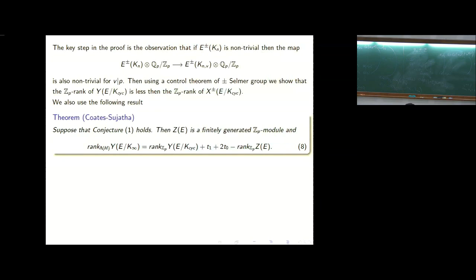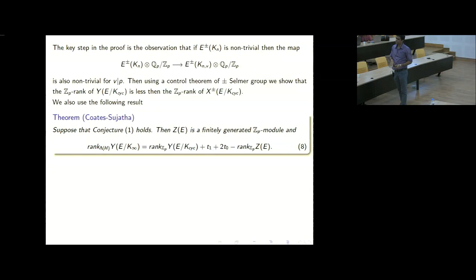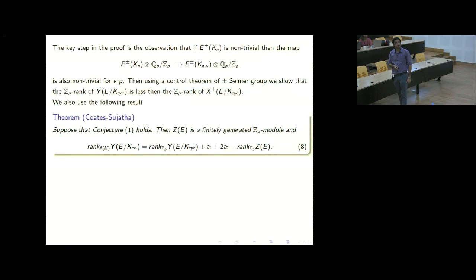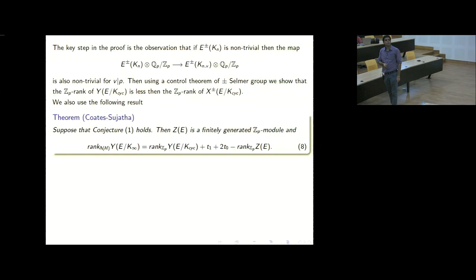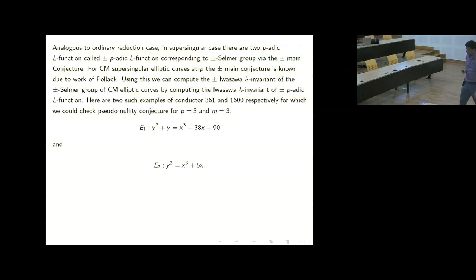Once we have this injection, we can apply the same trick: inside the Selmer group we have a divisible subgroup, we restrict the map there, show it is non-trivial, and then use a control theorem. We also need the Coates-Sujata restatement over the cyclotomic extension to apply to the plus-minus Selmer groups.